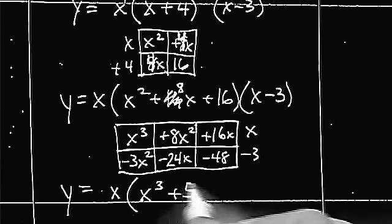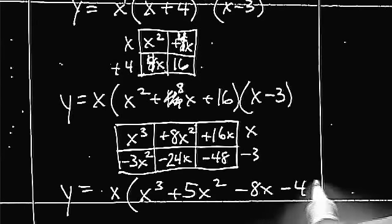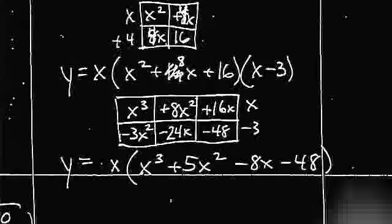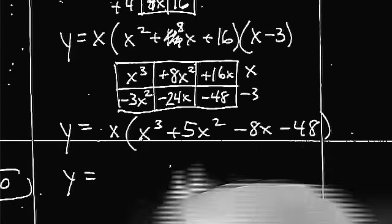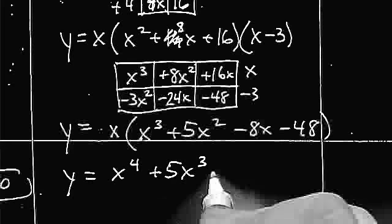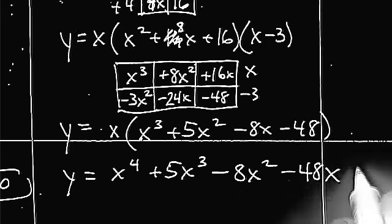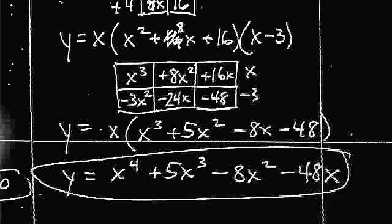So, x cubed, that's plus 5x squared, minus 8x, minus 48. And now I'm going to distribute the x into the whole thing, giving me x to the fourth plus 5x cubed, minus 8x squared, minus 48x, in standard form.